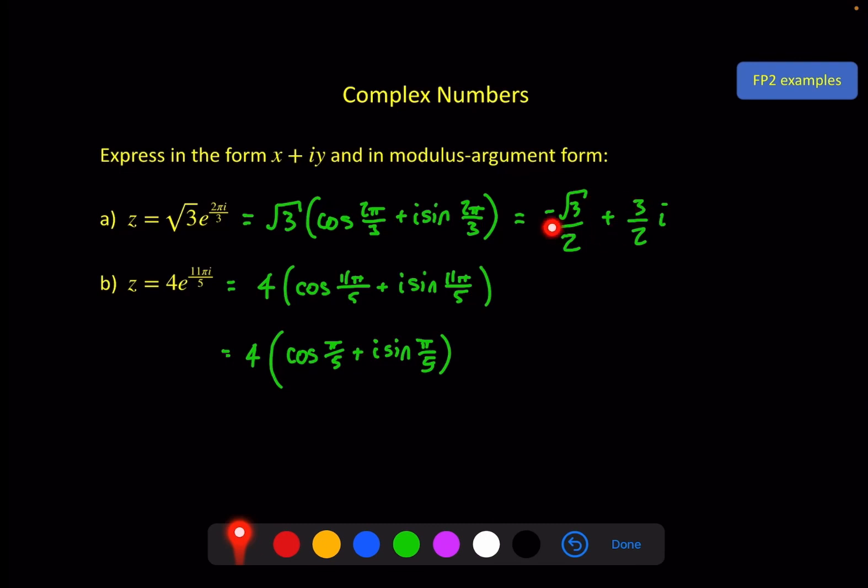So if we subtract 2π from that we get cosine π by 5 plus i sine π by 5 and that would be a more common way of seeing it in modulus argument form because the argument is now the principal argument. And of course we can do the same thing as we did over here, we just expand this out, put it on a calculator and see what this is in x plus iy form. This is not a very nice number, it's 3.236 rounded to three decimal places plus 2.351 also rounded to three decimal places i.